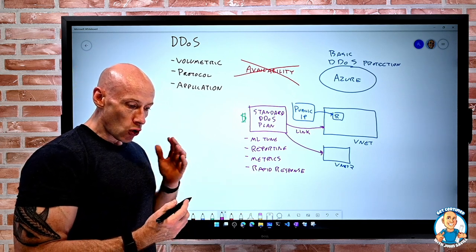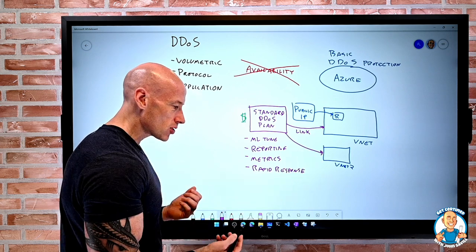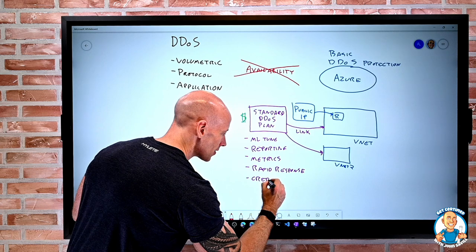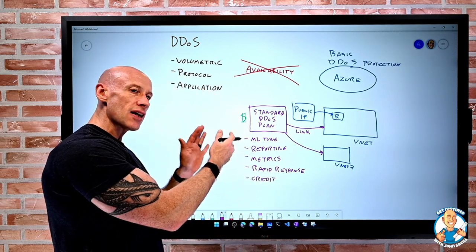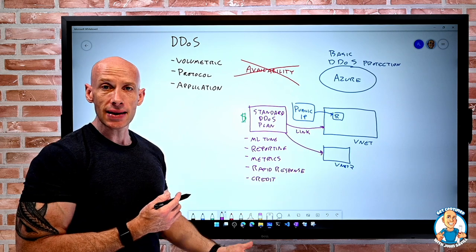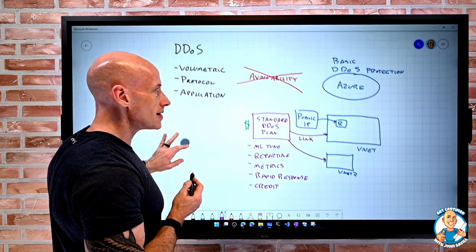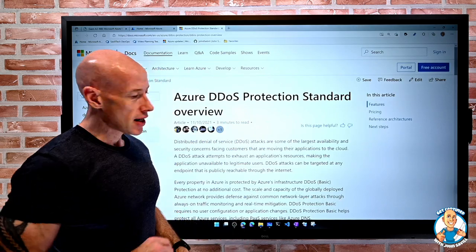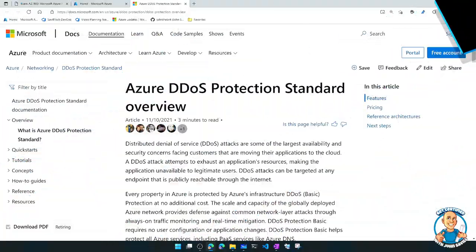And there's also if I have auto scale for my resources, there's the idea of credits that I can get. If this didn't give me the right protection, I can prove I scaled out to 20 instances because there was this denial of service attack actually happening. And if we go and look, we can see exactly the details of that standard protection.